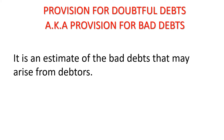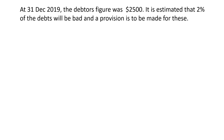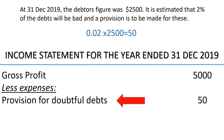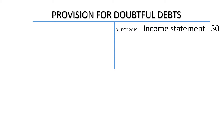Here is an example that shows how provision for doubtful debts is treated. At 31 December 2019, the debtors figure was $2,500. It is estimated that 2% of the debts will be bad and a provision is to be made for these. 2% of $2,500 is $50, and this amount is posted to the income statement as an expense. The provision for doubtful debts account is credited with $50.